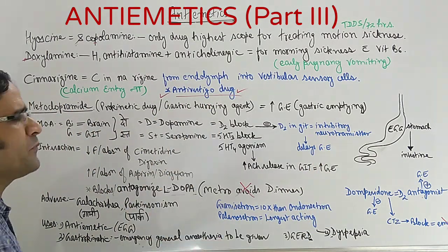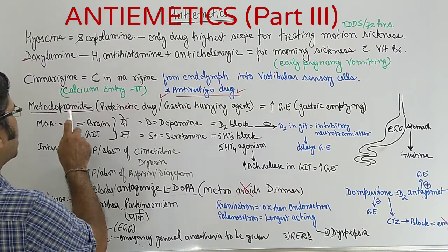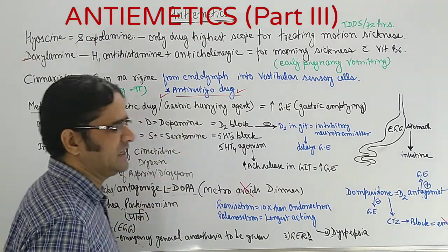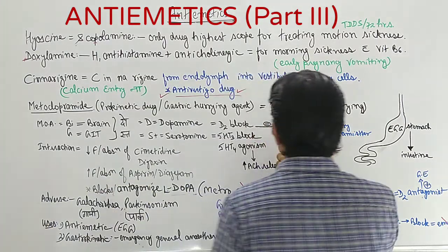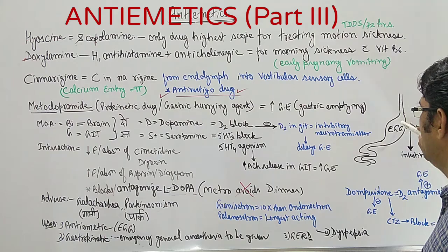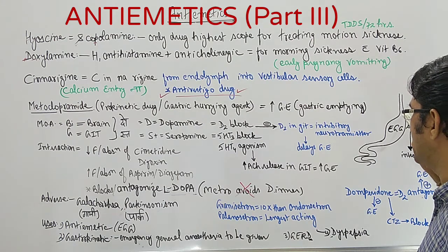The main important drug in that is metoclopramide. It is a prokinetic drug and gastric hurrying agent. It means it is a drug which increases gastric emptying. Because of that, the content which is present in the stomach comes into the intestine.